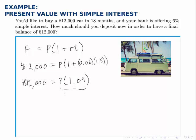Dividing both sides by 1.09, we find that P, the present value, equals 11,009 and 17 cents.